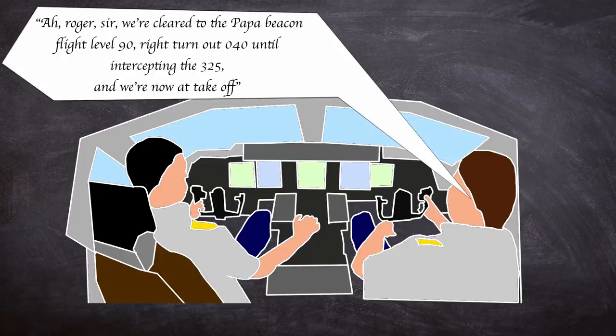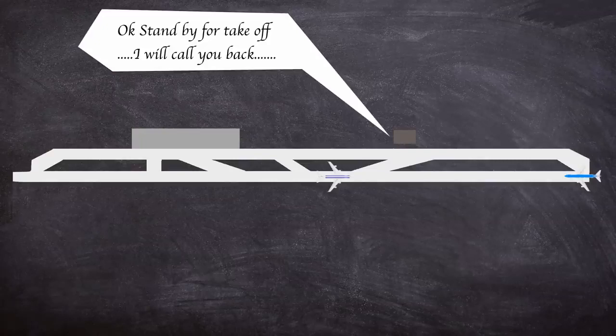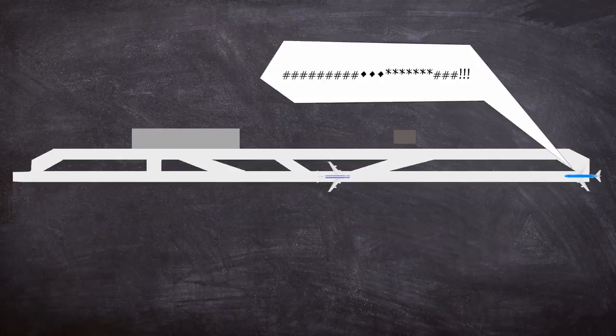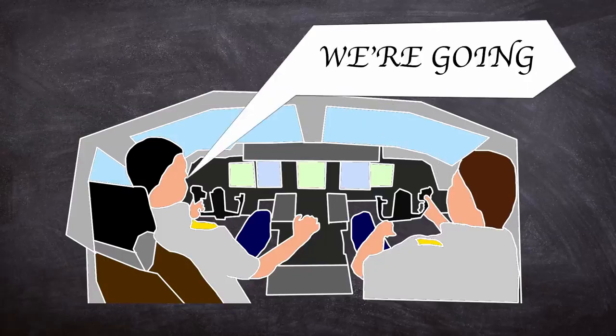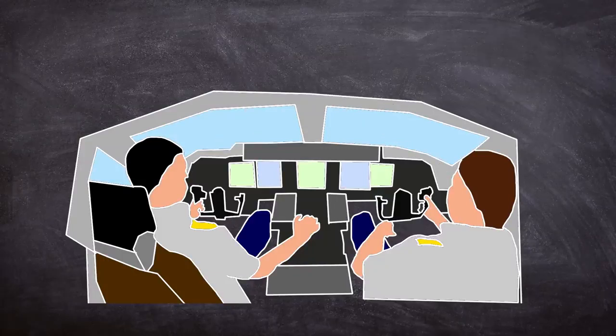ATC replied okay, stand by for takeoff, I will call you back. During this message, the KLM experienced radio interference, muffling the instructions. Van Zanten interrupted the co-pilot's readback with the comment, we're going. Taking ATC's non-standard use of okay as authority to proceed.